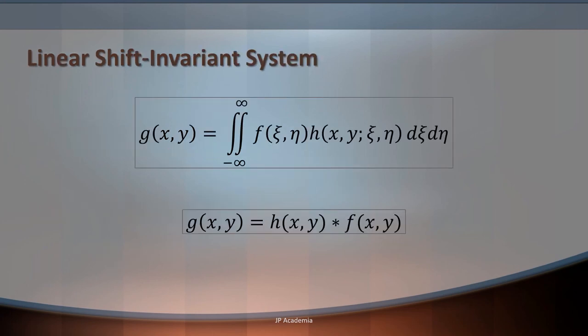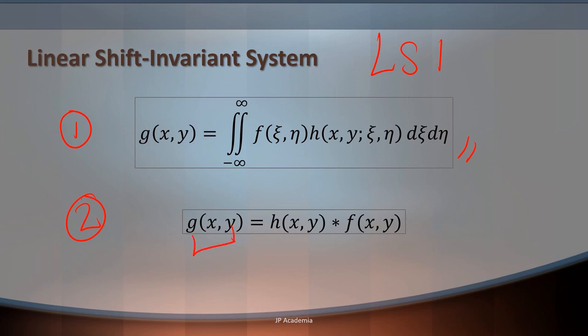If our system is a linear shift invariant system or LSI, then the superposition integral is also called your convolution integral, and it can be rewritten such that the output G is equal to your impulse response function or point spread function convolved with your input. Convolution plays a fundamental role in the theory of signals and systems.